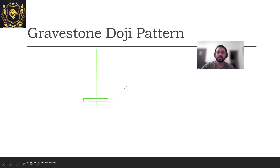What can you expect from this pattern? According to the doji, you can expect a downtrend from this particular position and point. Let's try to understand the market psychology behind this.